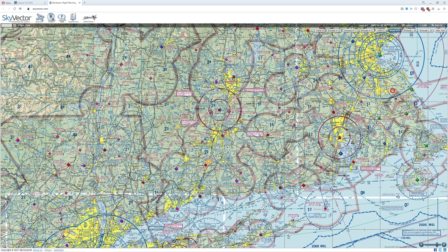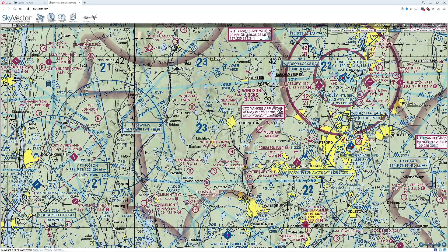The first thing we need to think about when it comes to cruise altitude is the minimum en route altitude. If we take a look here at a sectional chart, you'll notice there are these little numbers — you have a big number and a little number directly next to it. This refers to the minimum altitude to safely clear the terrain.